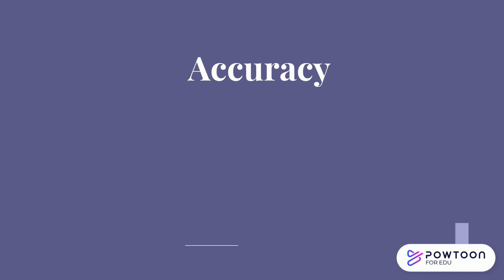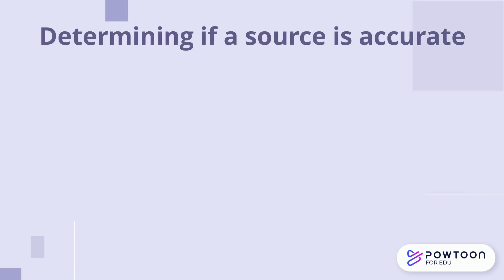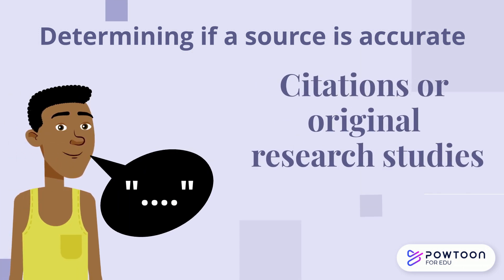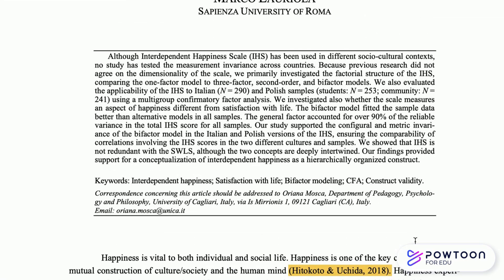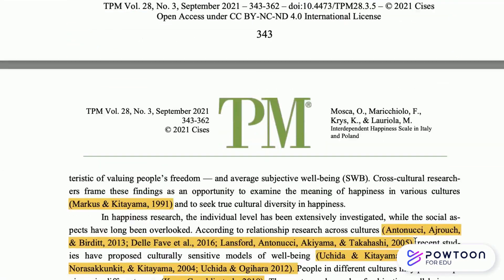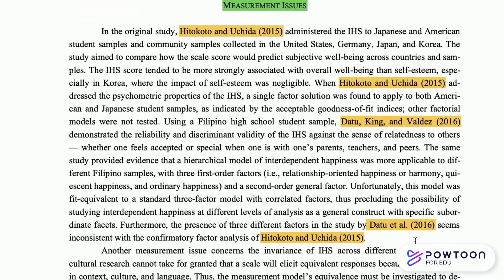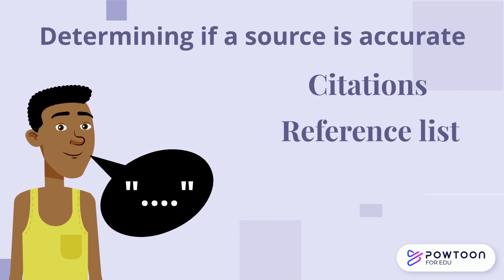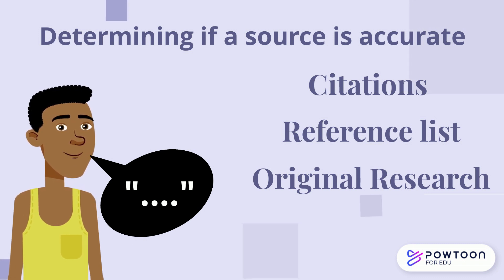Accuracy is another important aspect of evaluation and refers to whether the information is verifiable or correct. There are several different methods for determining if a source is accurate. First, see if a source is supported by evidence, such as citations or original research studies. This article has numerous citations to research, and they conducted original research to support the claims they made, so we can say with reasonable confidence that this article is accurate. Scholarly sources will always be supported by evidence that includes citations and a reference list, and depending on the discipline, they will also include original research and explanations about their methods.